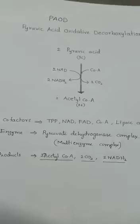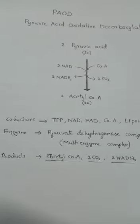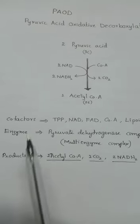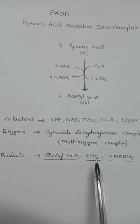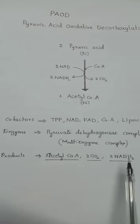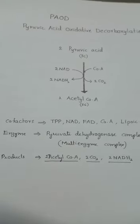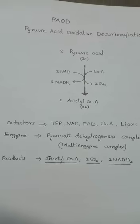This step is taking place in the mitochondrial matrix. In this step, the end products are acetyl coenzyme A, CO2, and NADH2. Thank you.